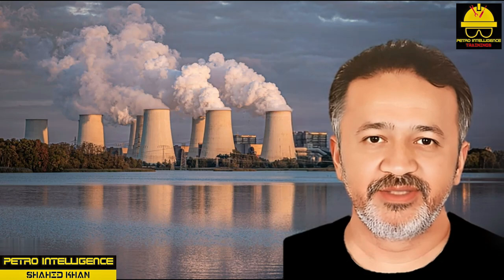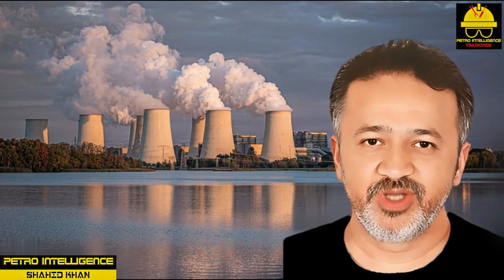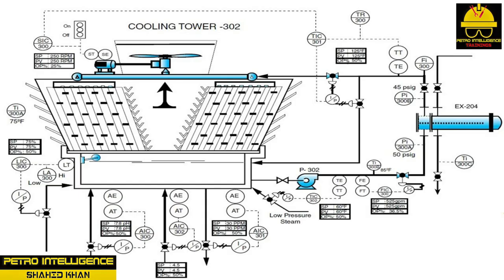Blowdown and cycles of concentration problems: concentration cycles in cooling towers range from 3 to 7 and are dependent upon the quality of the makeup water. Circulating water in CTW-302 is filtered and treated with biocides and algaecides to prevent microorganism growth, along with a control system for pH adjustment.